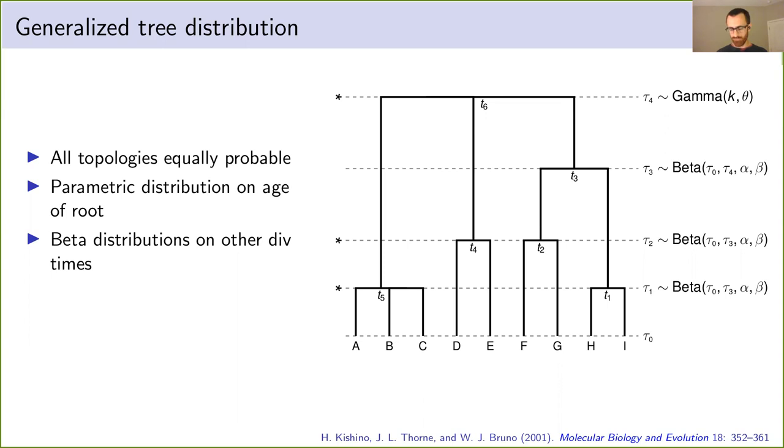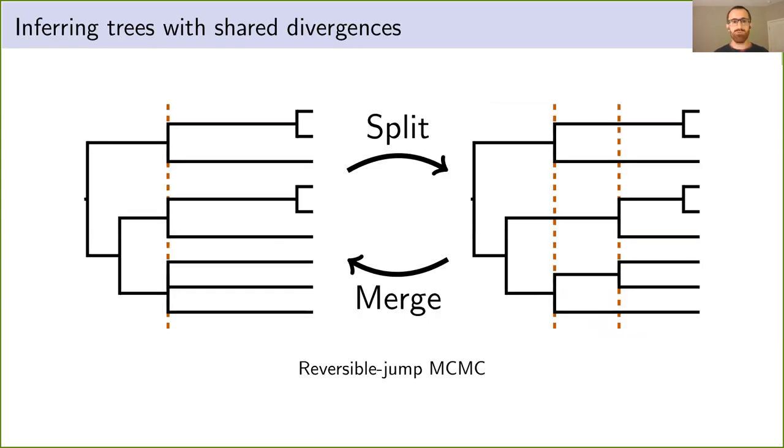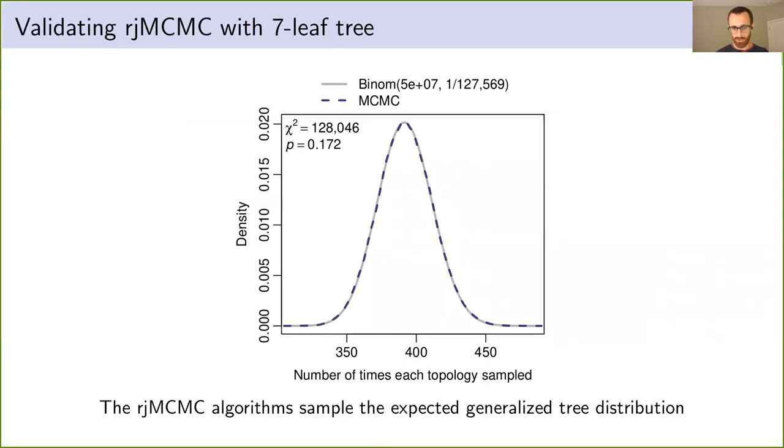All right. So we got a distribution. How are we going to do inference? We took a Bayesian approach and we used reversible jump Markov chain Monte Carlo to explore this expanded space of phylogenies that differ in the number of divergence times. I'll gloss over the details here, but I will show you that it's working. We did lots of validation tests. Here's one with a tree with seven tips. And if our algorithms are working correctly, the number of times each topology is sampled should follow a binomial distribution, which it is. So it looks like our algorithms are working correctly.